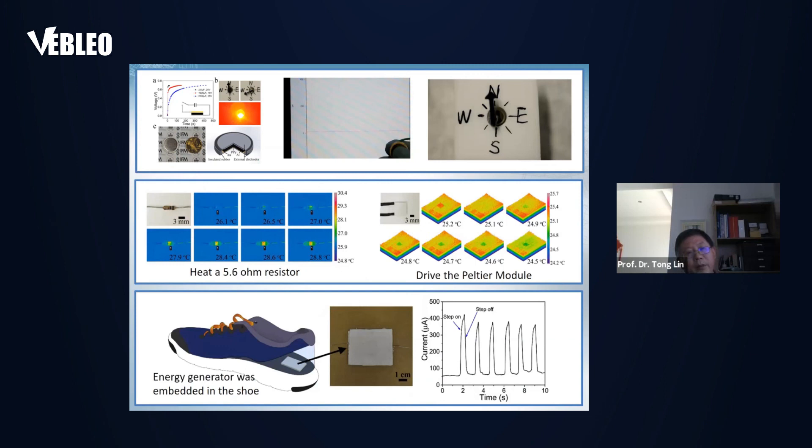We also proved the energy generator can be used for many different purposes. For example, we can make a button-like device. We use this device for sensing forces, like a force sensor to generate an electrical signal. The signal can also be stored in a capacitor. That energy can be used to drive motors, drive electrical heaters or electrical coolers. We can group them together, for example, embed into shoes for harvesting working energy. They all work well.